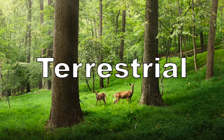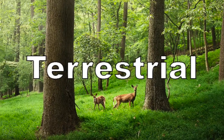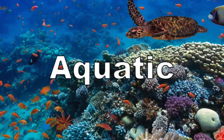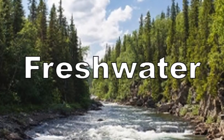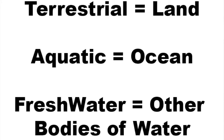The three main types of ecosystems are terrestrial, aquatic, and freshwater ecosystems. Terrestrial ecosystems are based on land, aquatic ecosystems are in the ocean, and freshwater ecosystems are in other forms of water, such as lakes or rivers.